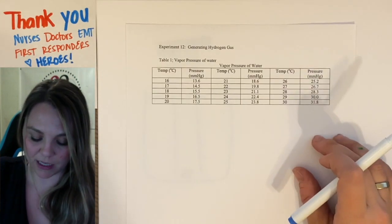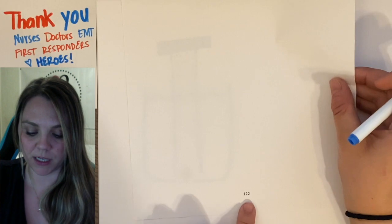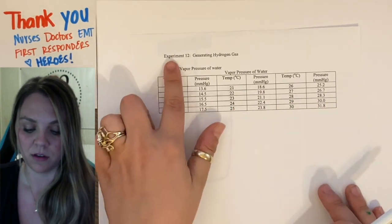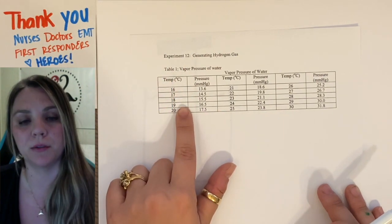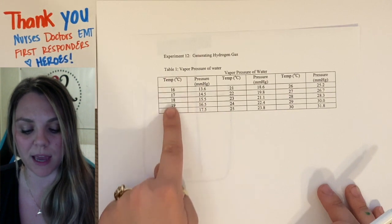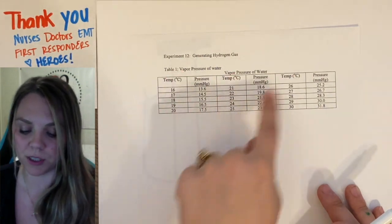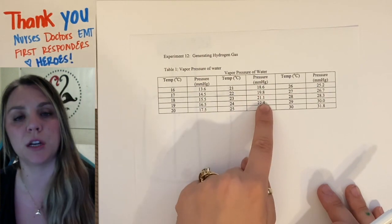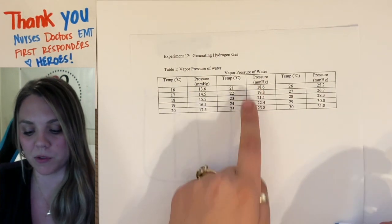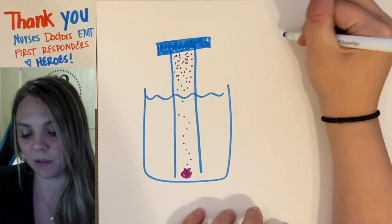There's actually a page in your lab, page 122. And the only thing it does is list for you a vapor pressure of water table. So it says at whatever temperature, which is why we measure the temperature, it tells you what the pressure in mmHg, your water vapor, is going to be. So, for the example for our lab, we have P total.